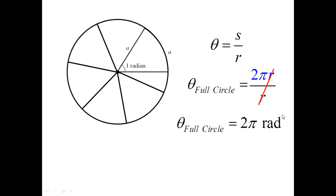So 2π radians fit in a full circle. For degrees, we use the little degree symbol; for radians, the abbreviation is RAD, but we actually very rarely use it. Because to a mathematician, a radian is the default measurement — it's only degrees if you're told it's a degree. If no unit is given, then it's a radian. Since by default mathematicians always think in radians, you'll essentially never see RAD written down — it's always implied.